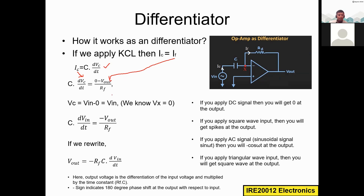Vc is the voltage across the capacitor, which is the potential difference Vin minus Vx. Since Vx equals zero due to virtual ground, Vc = Vin − 0 = Vin. So we can replace Vc with Vin in our equation.